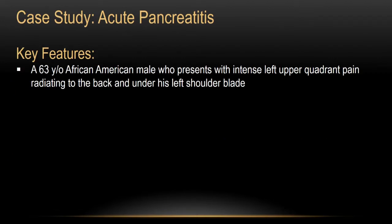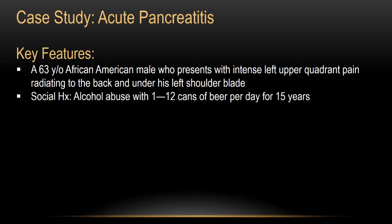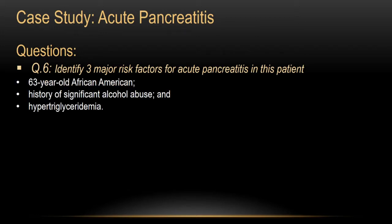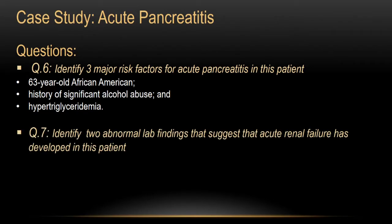For our case study, a 63-year-old African-American male presents with intense left upper quadrant pain radiating to the back and under his left shoulder blade. His social history includes alcohol abuse with 1 to 12 cans of beer per day for 15 years. The three major risk factors for acute pancreatitis in this patient are his age, his significant alcohol use history, and hypertriglyceridemia, which can also predispose to gallstone formation.